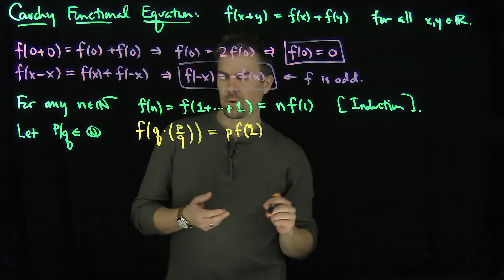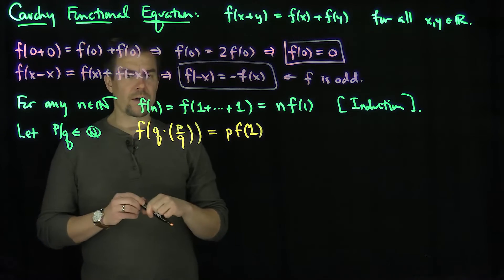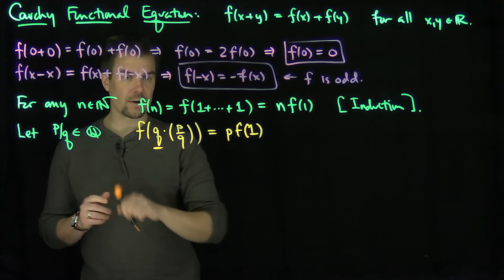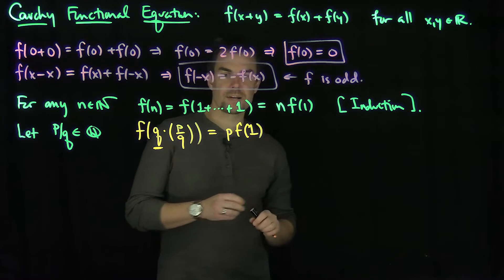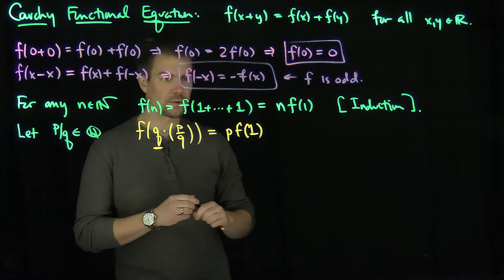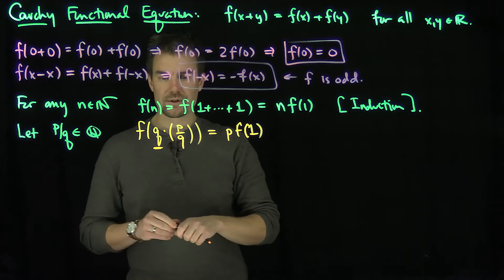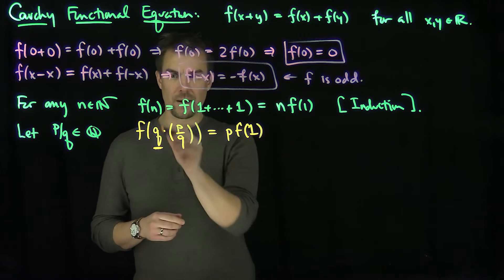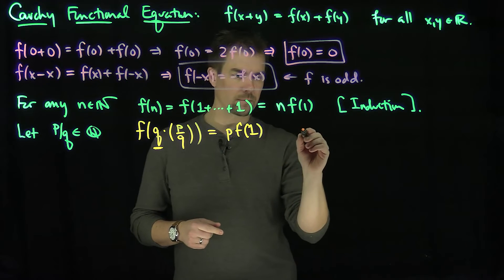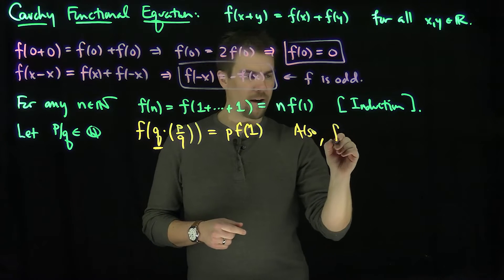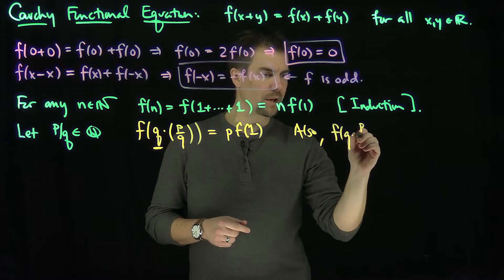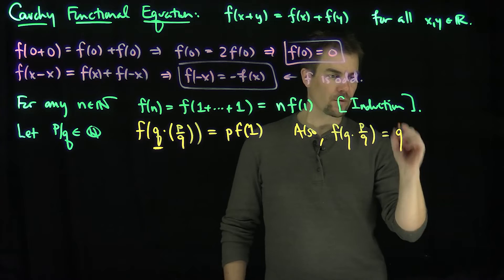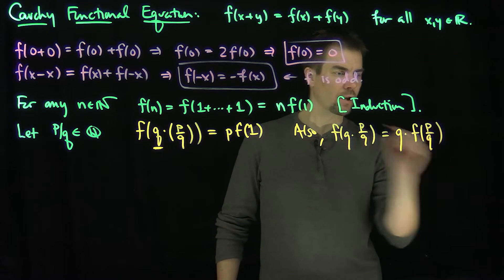On the other hand, what can I do? I know that q itself was an integer. And so I can write this as q copies of this number over here, p/q. So I can iterate this and say this is also equal to, by my iteration formula, f(q times p/q) is just q copies, q versions, q numbers of f(p/q).